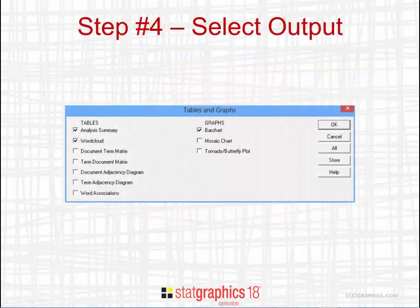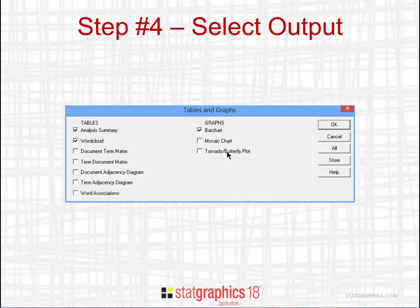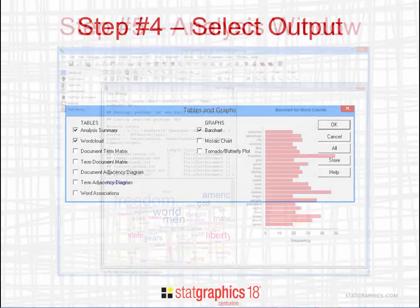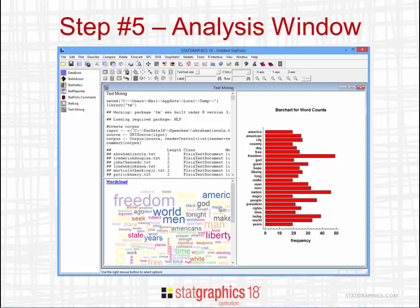Once you've chosen the options, you then select the output that you'd like to see. There are a number of different tables, including the very popular word cloud, and also a number of different graphs — including the tornado butterfly plot. Once you've made your selections and pressed OK, StatGraphics will create a script and send it to R. R will analyze your documents and send back output, which StatGraphics then displays in a typical analysis window.